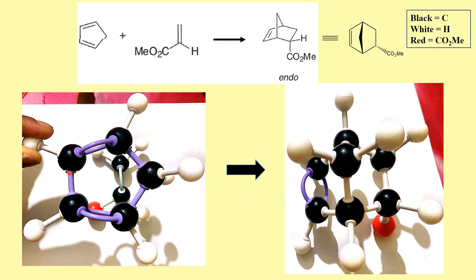The CH₂ group has now come up as this carbon bond forms. The groups that are inside will go down — the inside hydrogen can be clearly seen to have gone down. This is exactly how we represent it: the carbon-carbon bond is formed, hydrogen is like this and it is below. That is why this is called the endo product, because of the interaction between the COME group and the diene pi system.